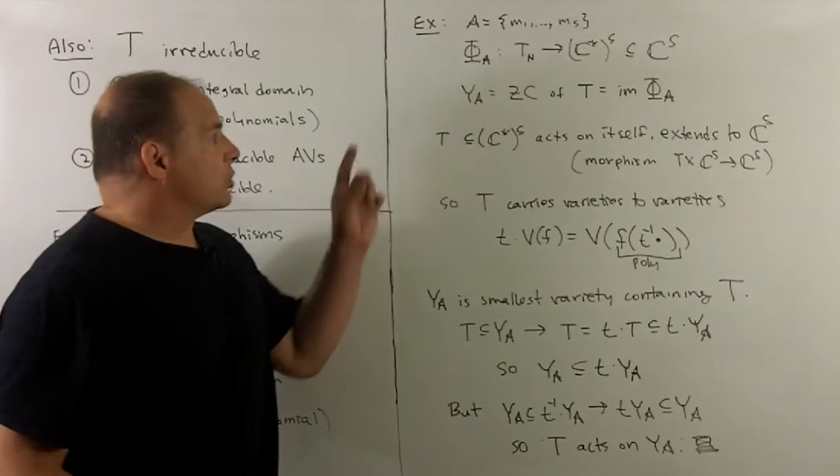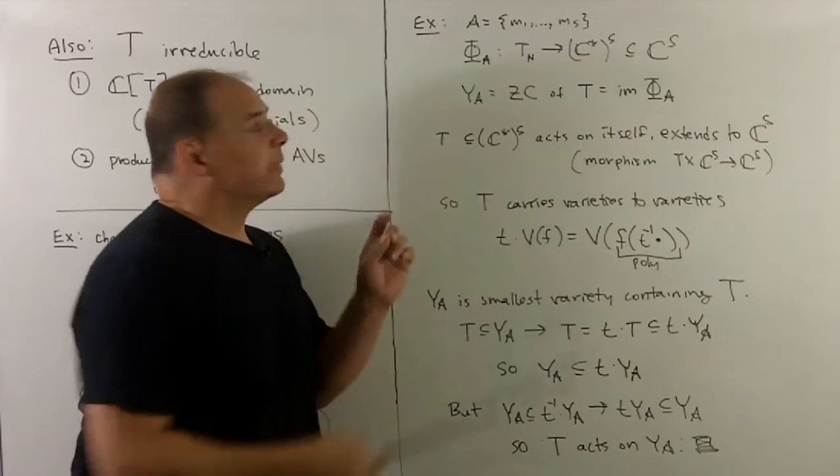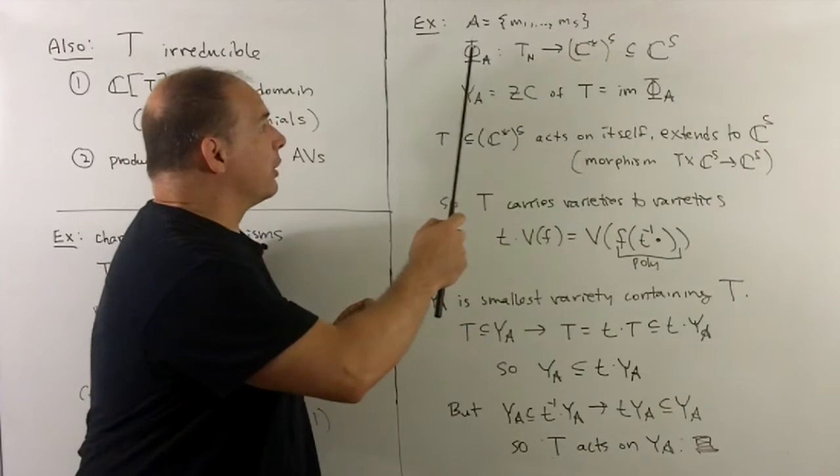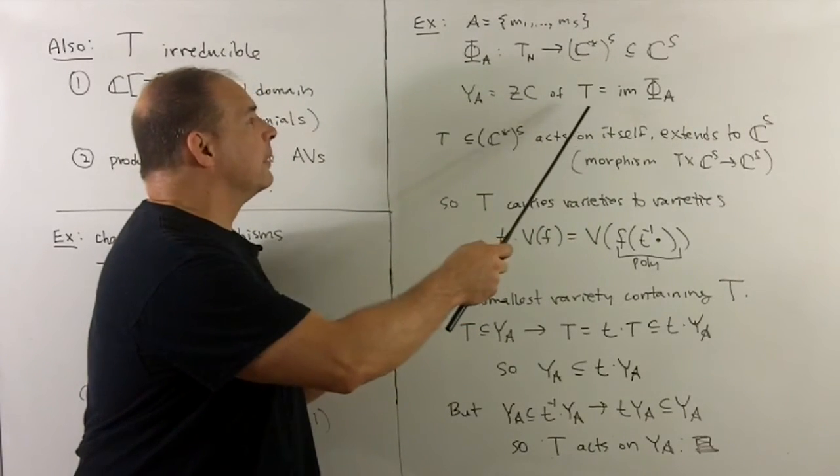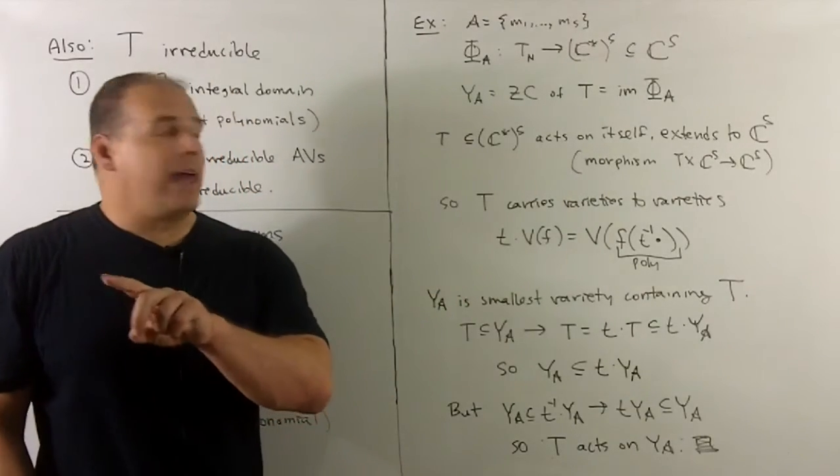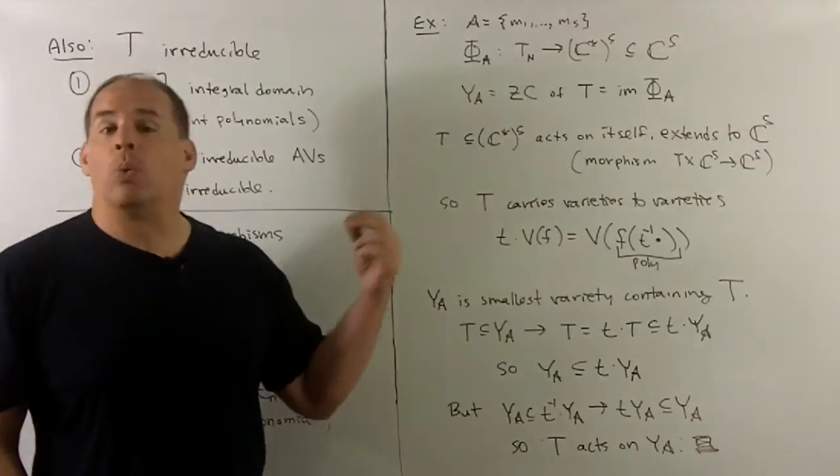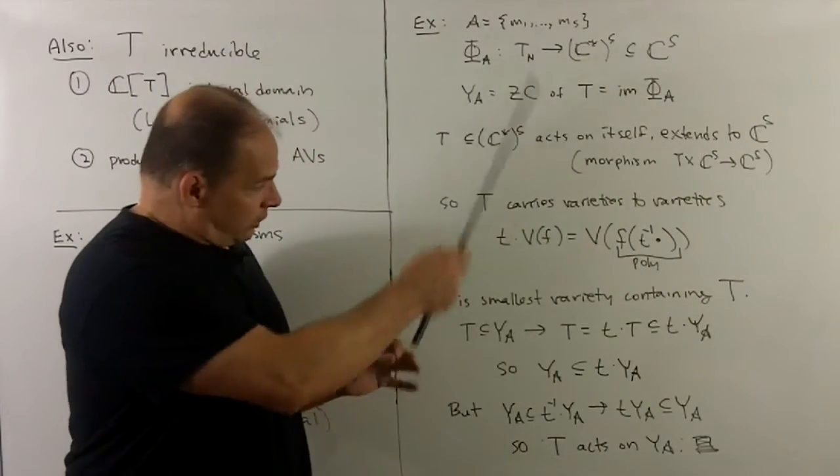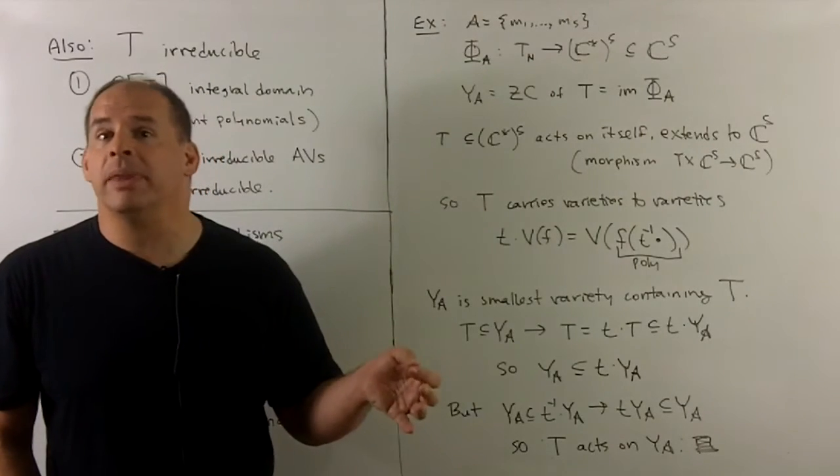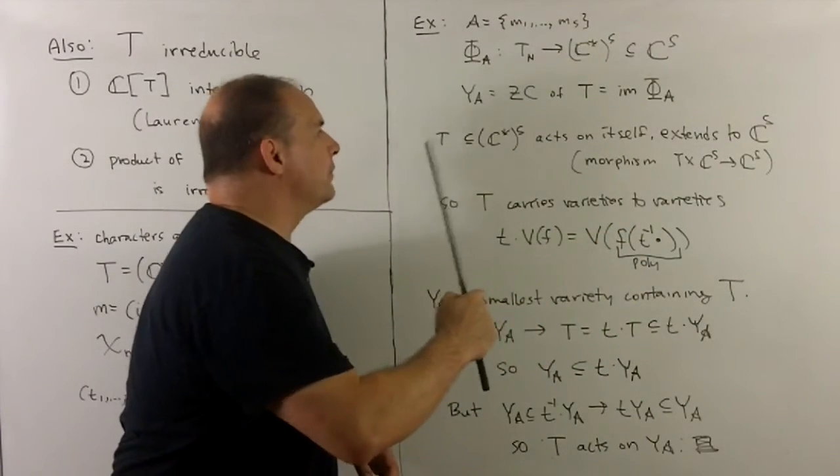Another thing we can check, let's recall our setup. So we're going to pick finite set A of these n-tuples, m1 through ms. We're going to build a map phi_A out of that, going from our torus to C-star^s. We'll call the image of the torus under phi_A T. Then we're going to take the Zariski closure of T. And then we claim that this is going to be an affine toric variety. So let's check that the action of T on Y_A carries us back into Y_A. So there's a group action of T on Y_A. Now, let's go through all this. So I have T sits inside of C-star^s, that acts on itself in a natural manner, just by group multiplication, and that extends to all of C^s. And that's going to be by morphisms. So we have a group action here of T on C^s.